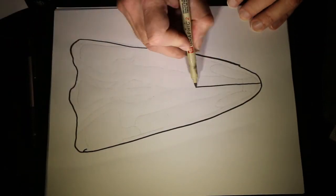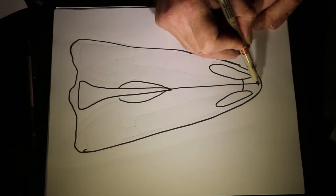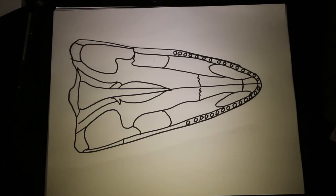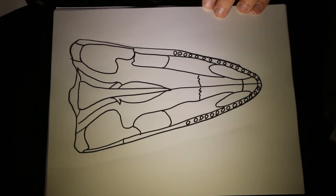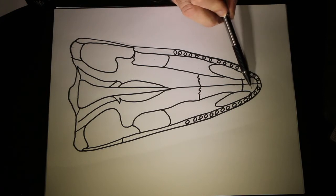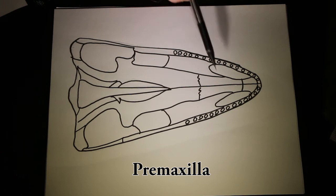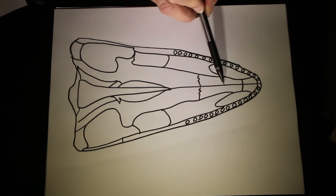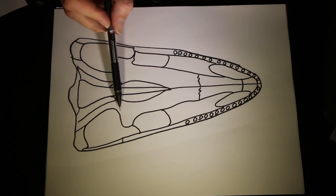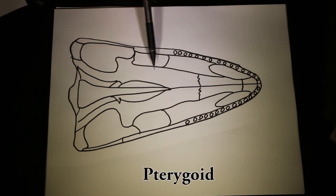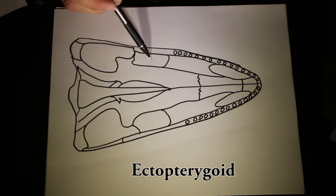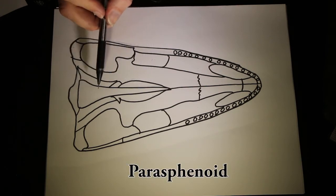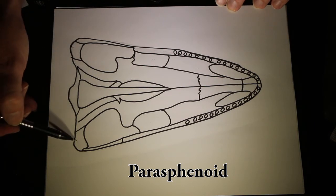Let's flip that skull over and draw the roof of the mouth — the ventral view of the early reptile. In the front we have the premaxilla with the teeth and the maxilla on either side. We have the nasal openings here, and in the roof of the mouth we have the vomer, the pterygoid back here where the upper jaw muscles attach, and the ectopterygoid. We have this long bone at the base of the cranium called the parasphenoid, and then back in the corner we have the quadrate.